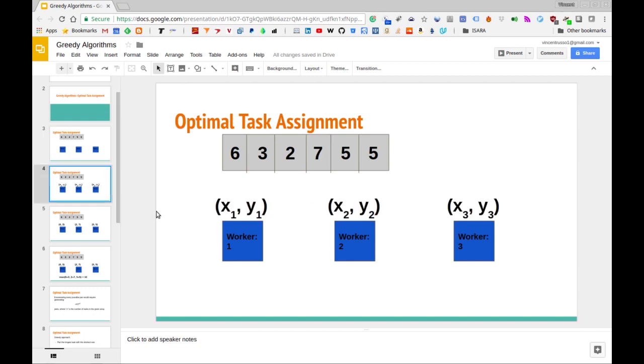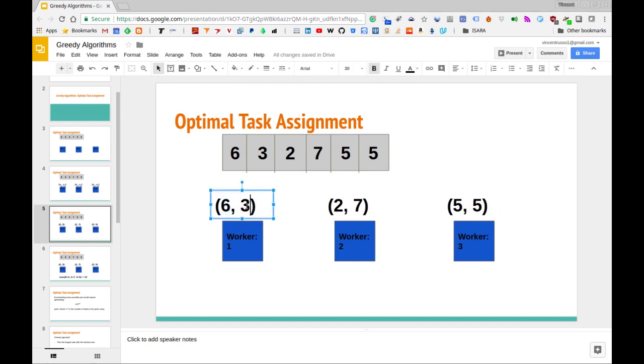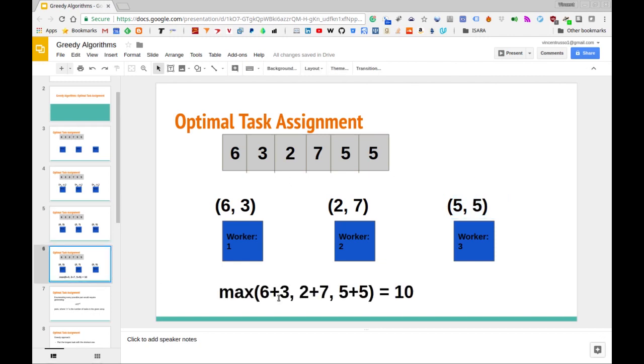So that is the problem. We want something that looks like this, where we assign each worker a pair of tasks. Let's look at a solution for this particular problem with this array. The optimal solution is where worker one gets tasks that take six and three hours, worker two gets tasks that take two and seven hours, and worker three gets tasks that take five and five hours. If we calculate the total amount of time it takes worker one to complete its tasks, six plus three is nine.